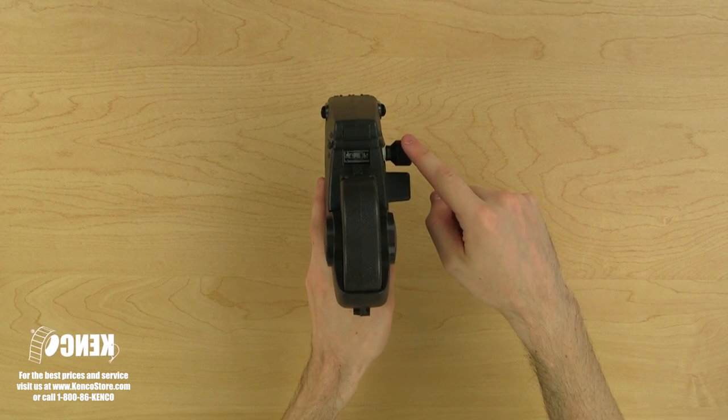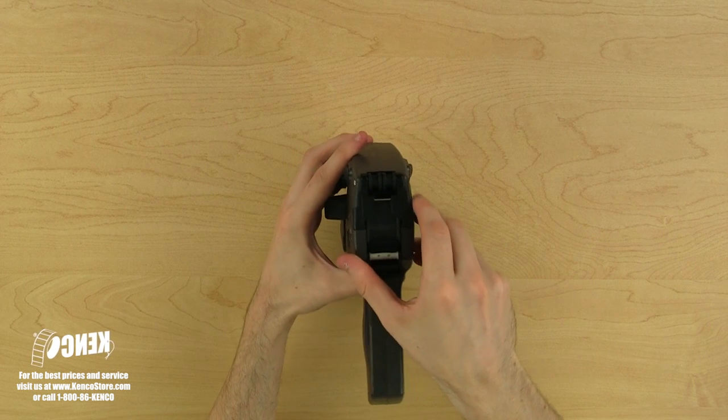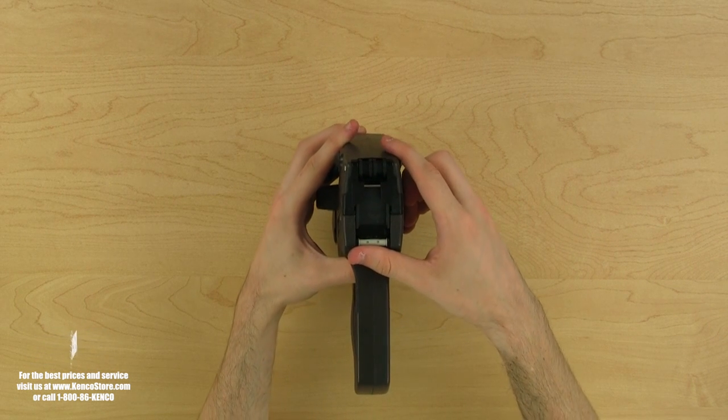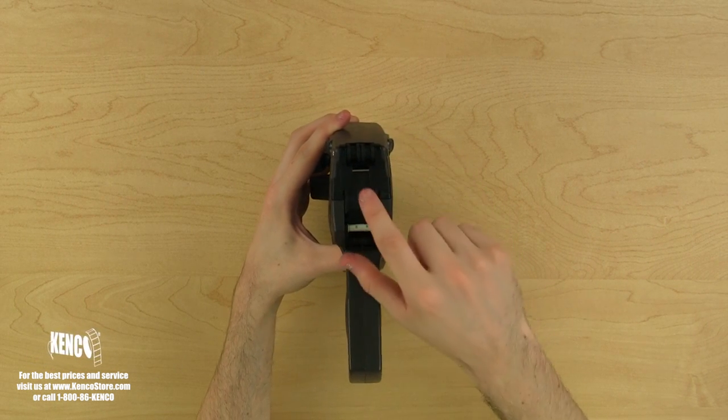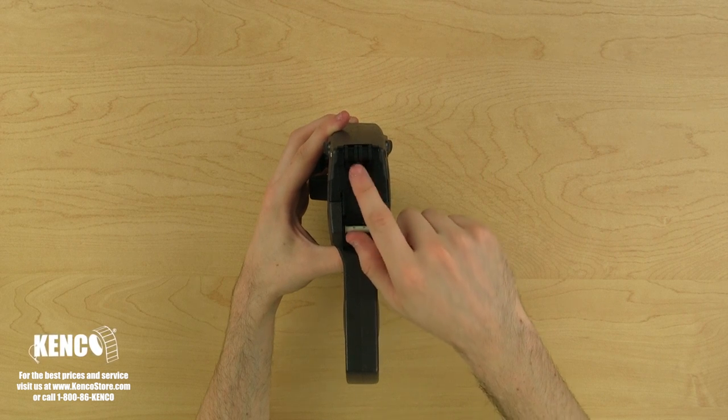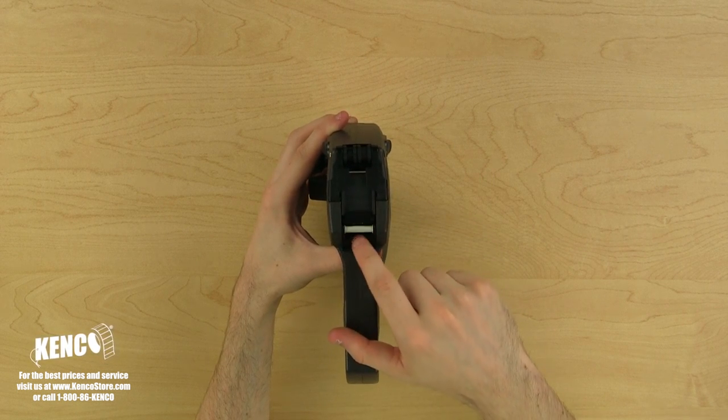Let's turn the gun towards us and look at the front. On the top, you will see the nip rollers. These will help apply the label to your product. Below the nip rollers, you will see a silver roller and below that, the gray feed bar.